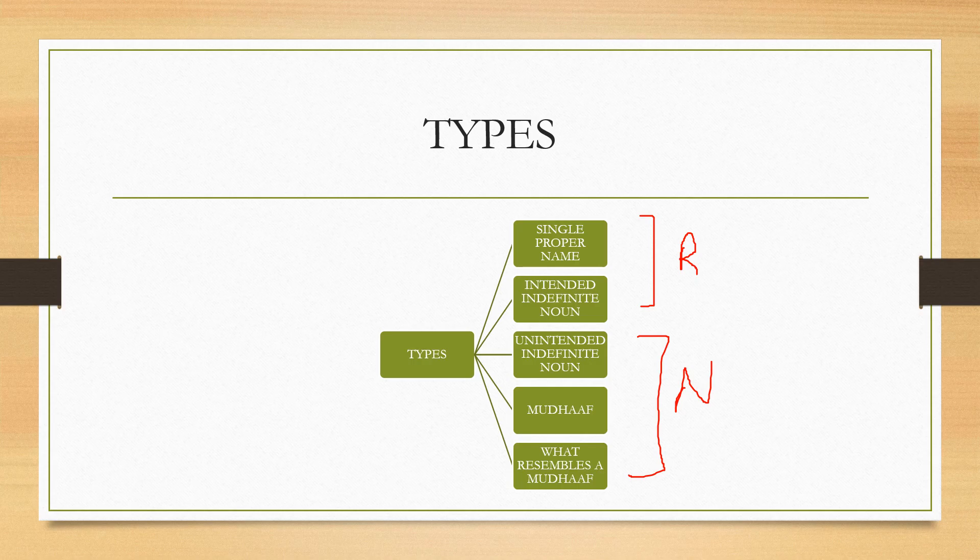So these are the five types of nouns that can come after the evocative particle, and we call these five types of nouns all types of al-munada.